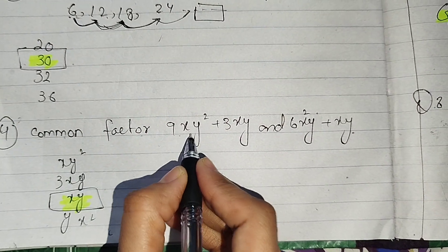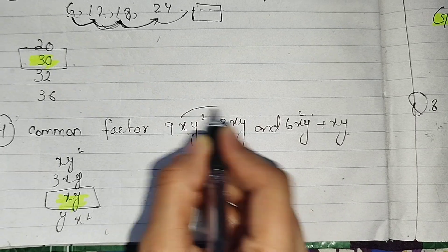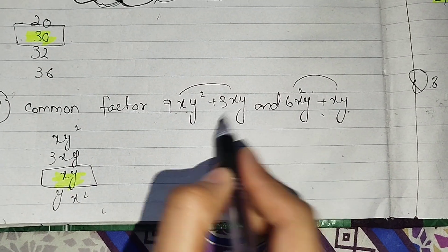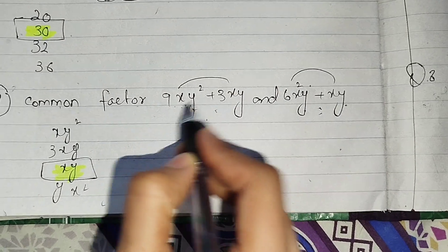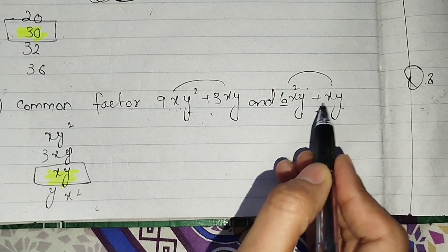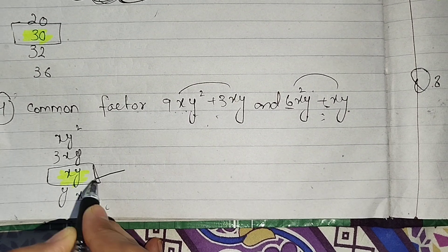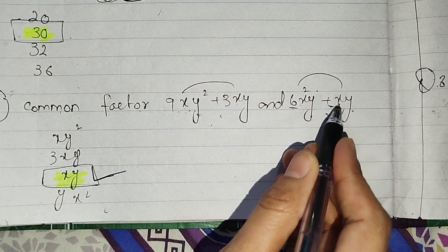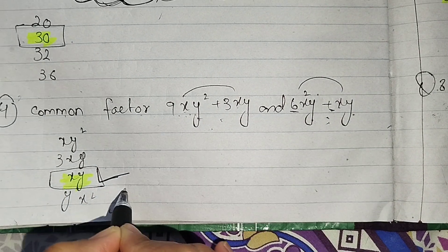Now look, the common factor is 9xy squared plus 3xy. The common factor will be x, y. Because here is xy squared, here is xy. So we will take x and y with lower power. Here is 1, here is 1, here is 2, here is 1. So y power is 1.